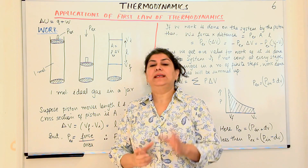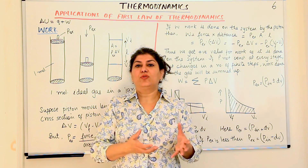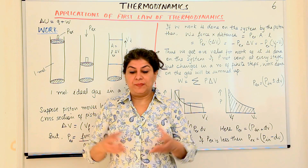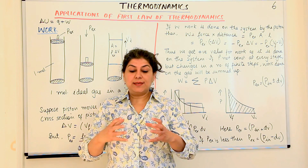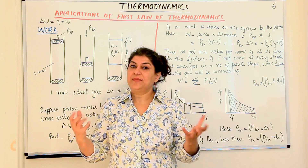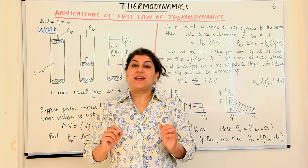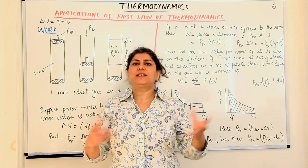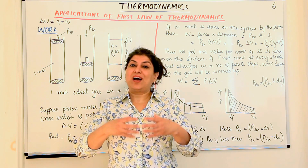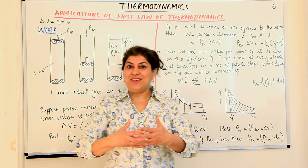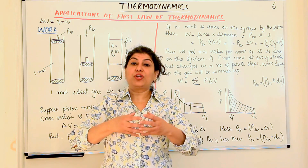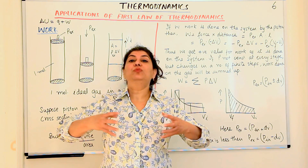How is work done in chemistry when you are carrying out a thermodynamic process? You carry out a chemical reaction and the products obtained are either gases, or the reactants are gases which may be used up, or products formed are gases. When gases are formed or the pressure of the gas increases, the volume increases.